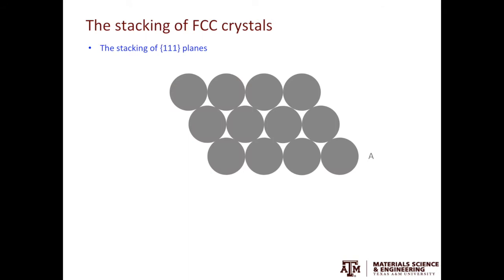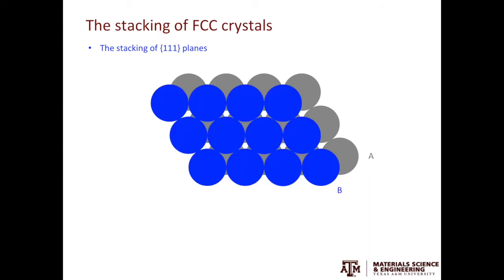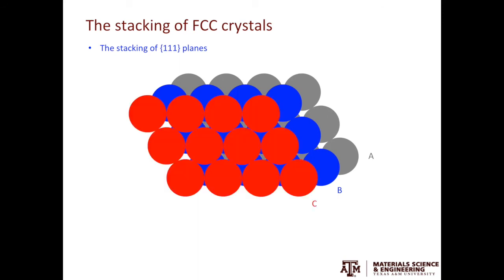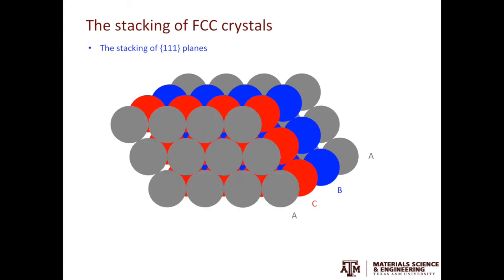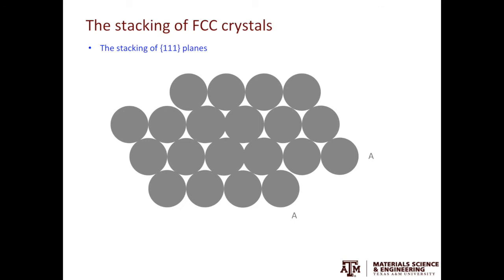If we only focus on the 111 planes, they have A, B, C, A, B, C stacking. Let's look at the stacking layer by layers. We start by the A layer as shown by these gray spheres. On top of the A layer we have the B layer as shown by the blue spheres. Above the B layer we have the C layer as shown by these red circles. If we keep stacking in this order, the next layer will come back to A. If you don't believe it, we can remove B and C and now we see these two A layers, they completely overlap. With this knowledge in mind, we are ready to look at the dislocations again.